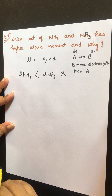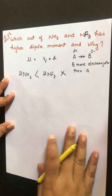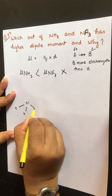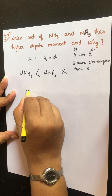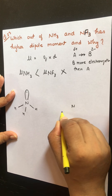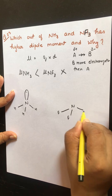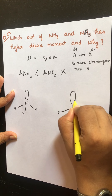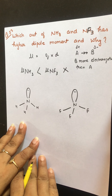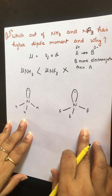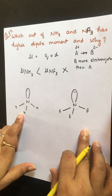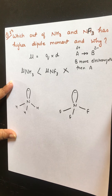To understand the dipole moment of NH₃ and NF₃, we need to look at their structures. NH₃ has a pyramidal shape with one lone pair. In the case of NF₃, the structure is also pyramidal with one lone pair of electrons. In both cases, nitrogen is sp3 hybridized with a pyramidal shape.